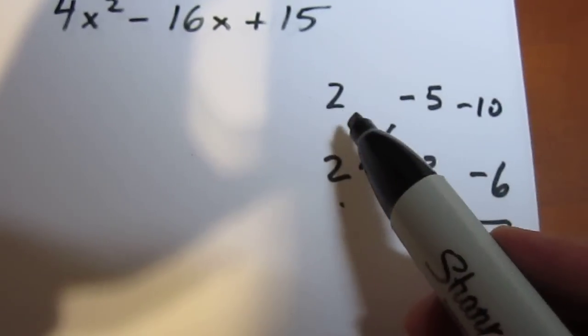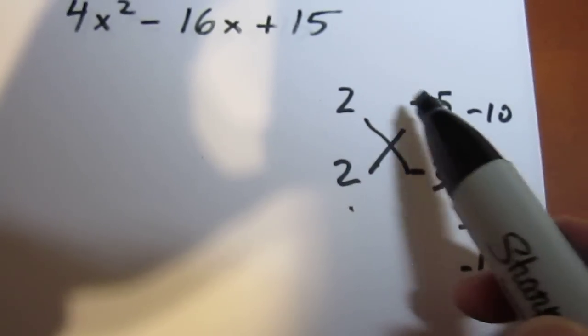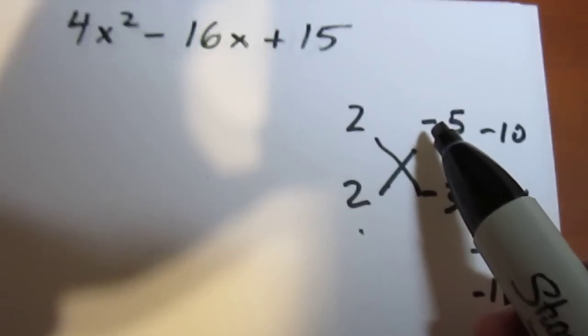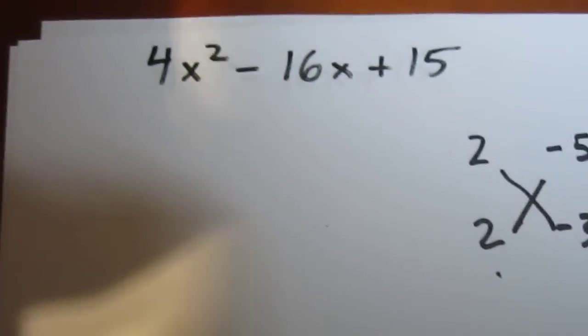So what that means is we now ignore the criss-cross and read straight across. 2x minus 5 is our first factor. 2x minus 3 is our second factor.